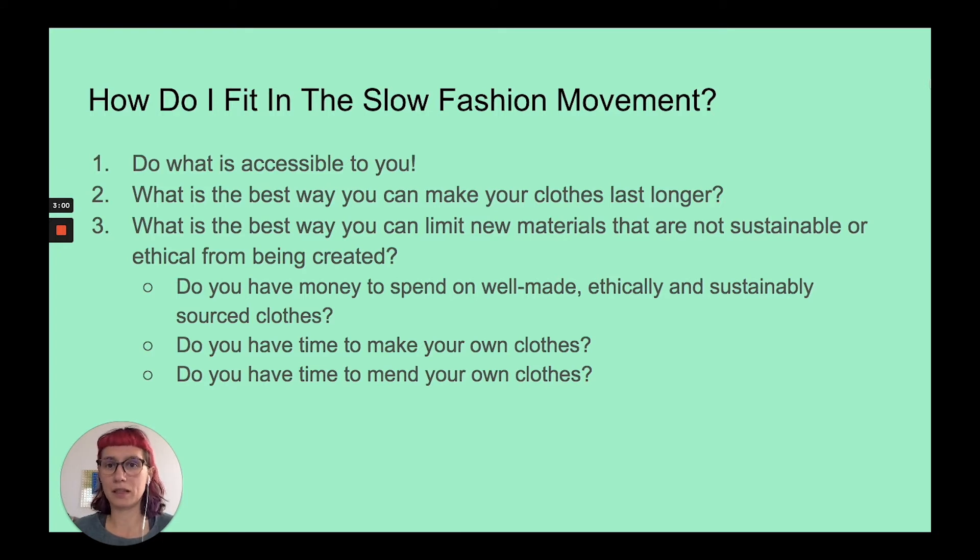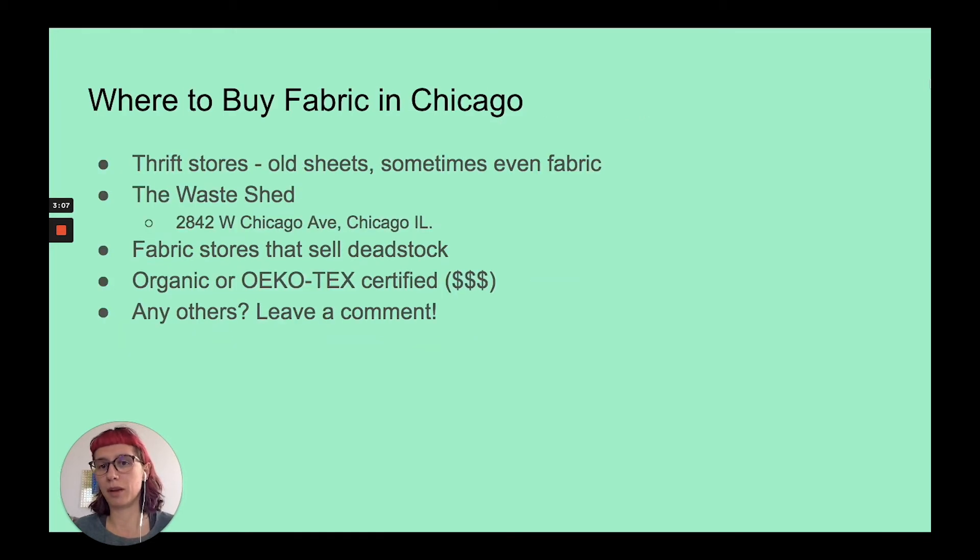To make this boxy tee, we're going to look at how we can source materials in a sustainable and ethical way. Where to buy fabric in Chicago? First place that you can look is thrift stores. Old sheets are a great resource that you can find in thrift stores. Just make sure you check the fiber content on the tag.